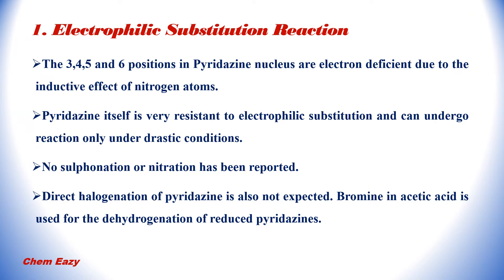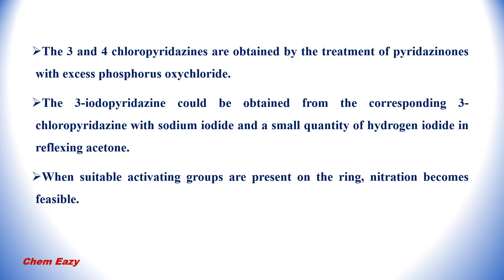Bromine in acetic acid is used for the dehydrogenation of reduced pyridazines. 3-chloropyridazine and 4-chloropyridazine are obtained by the treatment of pyridazinones with excess phosphorus oxychloride. 3-iodopyridazine could be obtained from the corresponding 3-chloropyridazine with sodium iodide and a small quantity of hydrogen iodide in refluxing acetone. When suitable activating groups are present on the pyridazine ring, nitration becomes feasible.